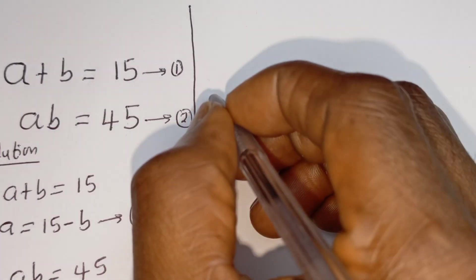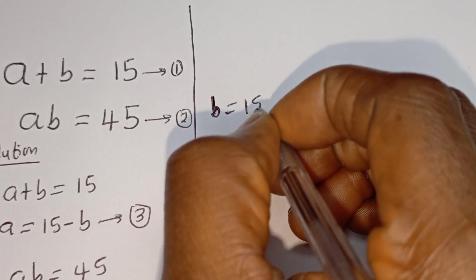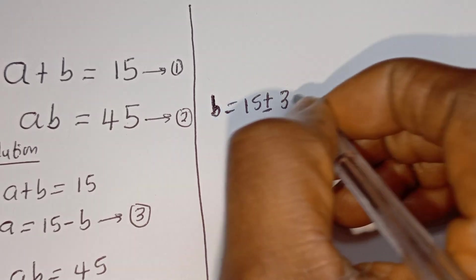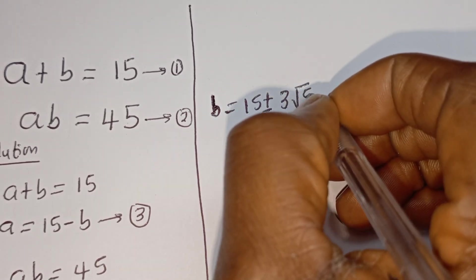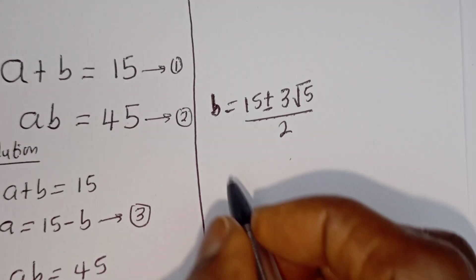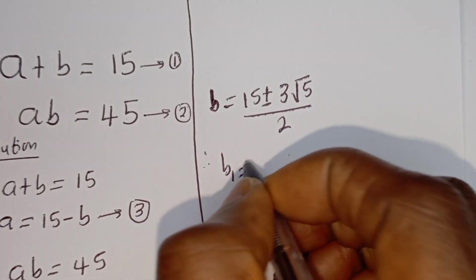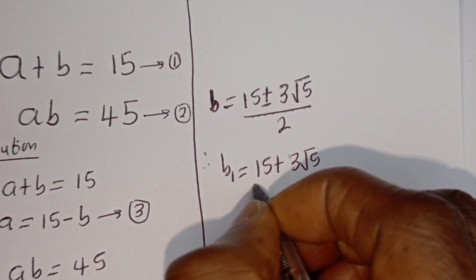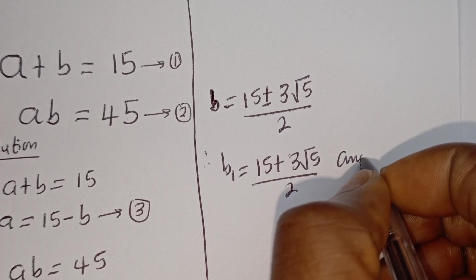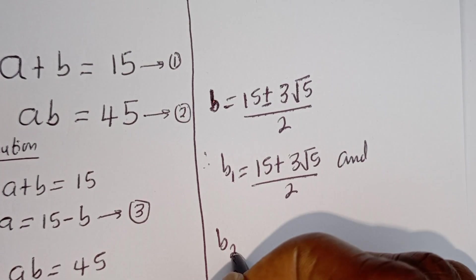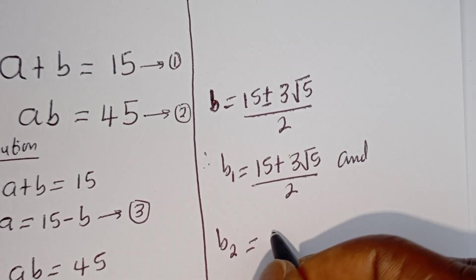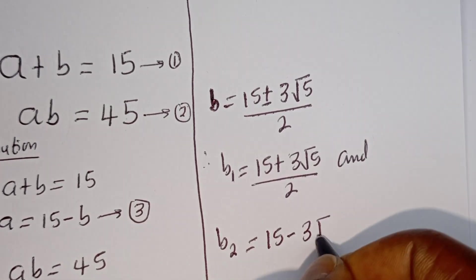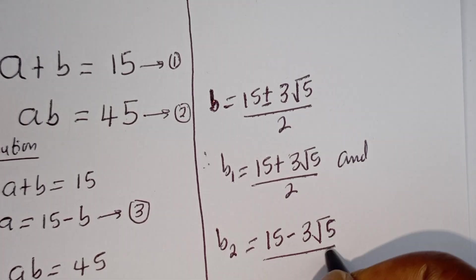From there, B is equal to 15 plus or minus square root of 9 — that is 3 — times root 5, over 2. Therefore, B1 is equal to (15 plus 3 root 5) over 2, and B2 is equal to (15 minus 3 root 5) over 2.